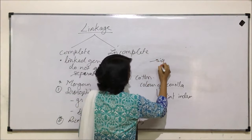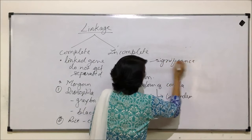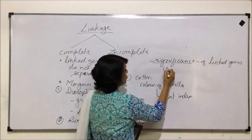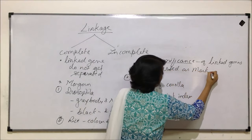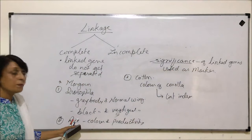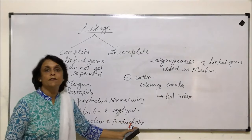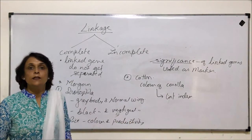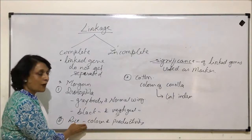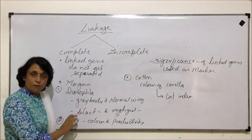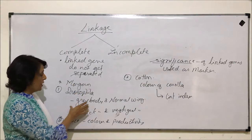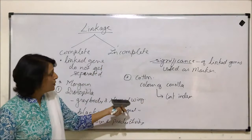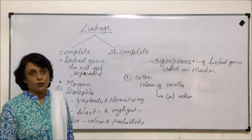The significance of linked genes is that they are used as markers. For example, if we observe a particular color of the rice grain, we know the productivity is going to be high — this is what farmers do when trying to estimate crop production from their field. In the case of cotton, farmers also use flower color for productivity estimation. So these are practical applications of the two types of linkage.